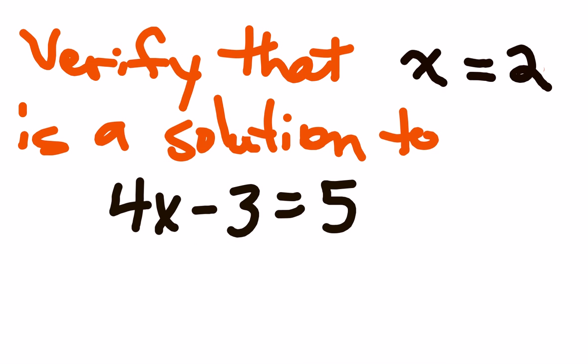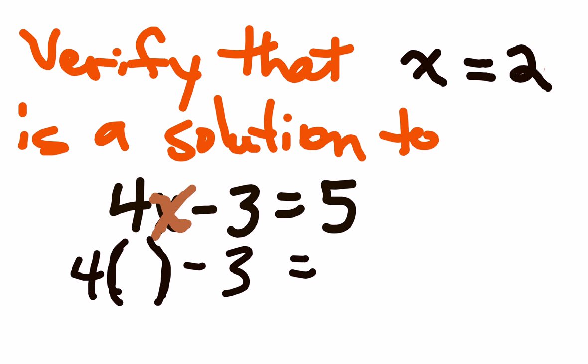We'll verify that X equals 2 is the solution to 4X minus 3 equals 5. Wherever we see an X in our equation, we're going to plug in the solution we got. The best way to do this is to use parentheses. When you have positive or negative signs, anytime you plug in a value, use a set of parentheses. Instead of X, I'm putting empty parentheses and writing out my equation. Then I'll put the value 2 into those parentheses.